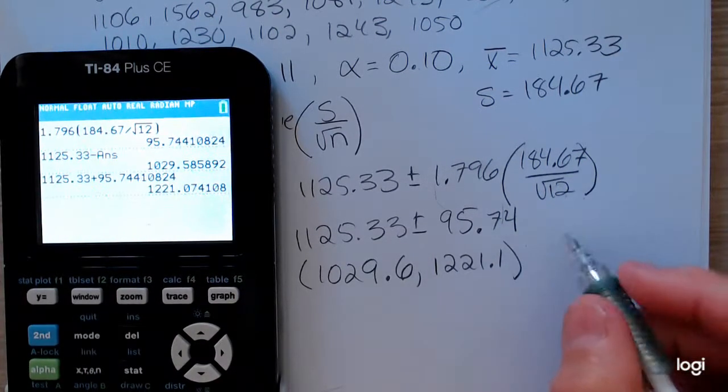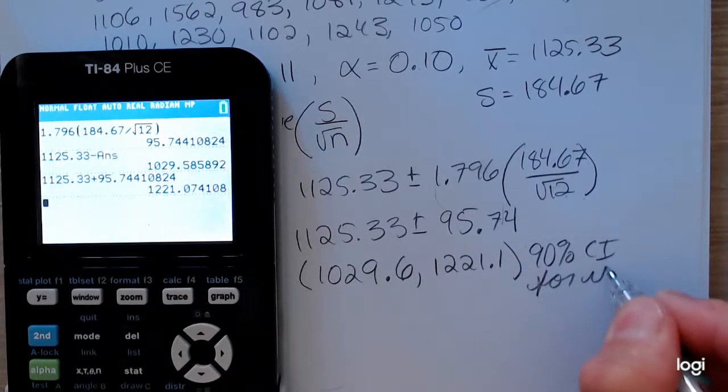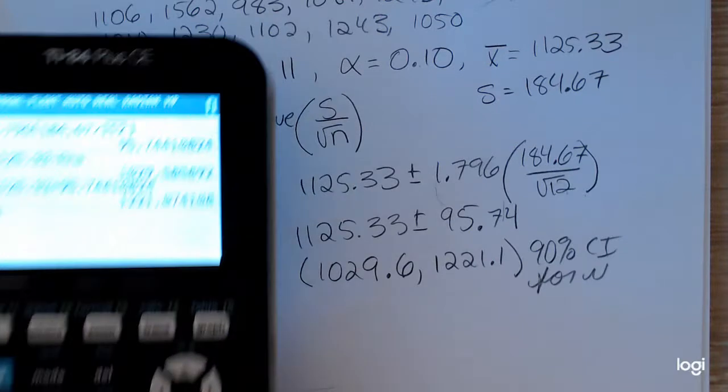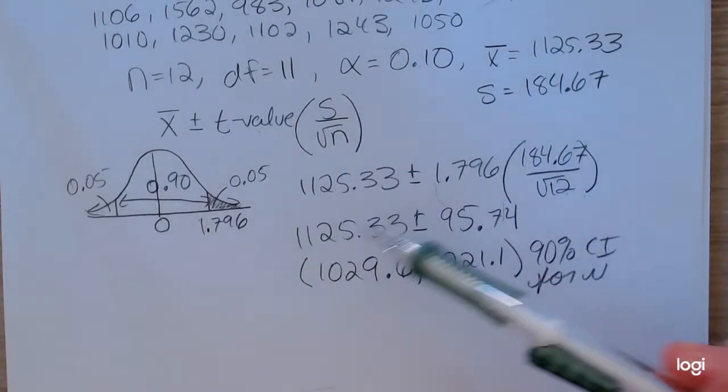So this will be a 90% confidence interval for mu, my population mean IQ scores. So these are the pieces you would need if you were to do this by hand.